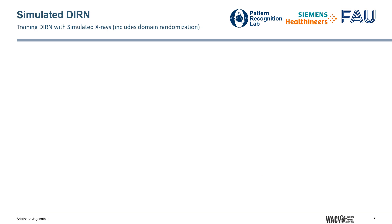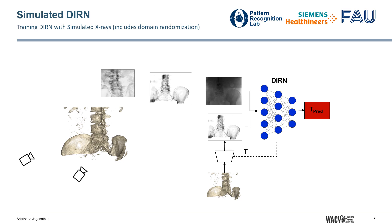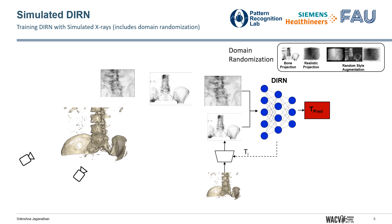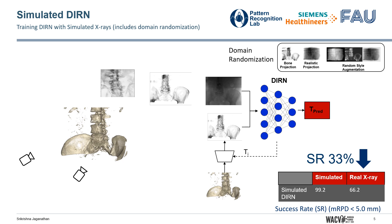we could use CT volumes and generate simulated X-ray projections from the CT volumes using virtual cameras. The relative transformation between the virtual cameras gives us ground truth registration, and this allows us to train the registration network without requiring any paired datasets by simply replacing the X-ray image with the simulated X-ray projections. We perform domain randomization to improve the usability of our simulated trained registration network on real X-ray images. However, we observe that such a network, even after domain randomization, works well on the simulated domain but fails significantly on real X-ray images.